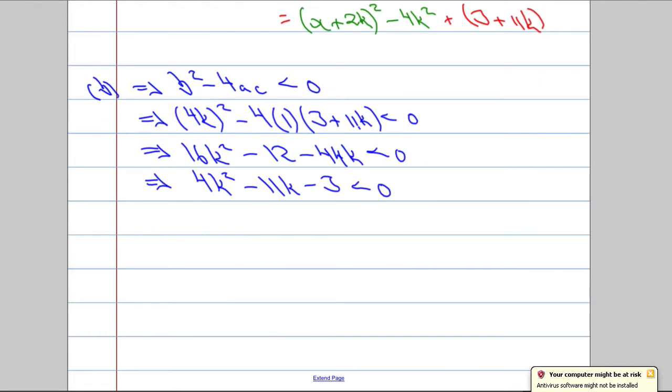And also, I'm going to rearrange it because I can see that it's a quadratic. I've got k squared, I've got k, I've got this constant to divide everything by 4. And rearrange it so it looks more familiar to us. 4k squared minus 11k minus 3 must be less than 0.